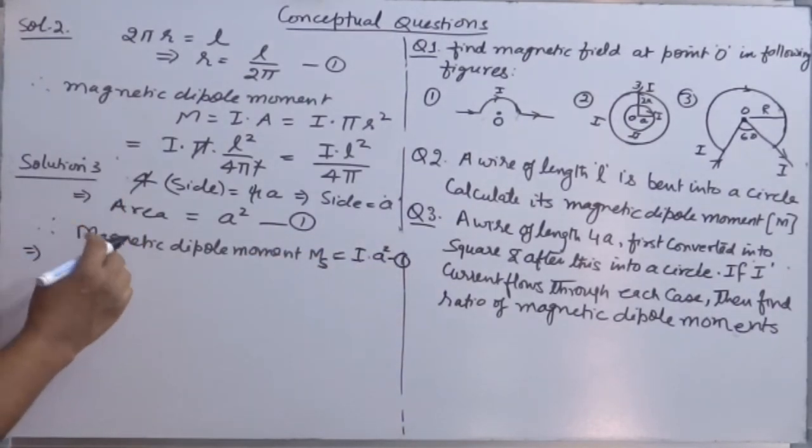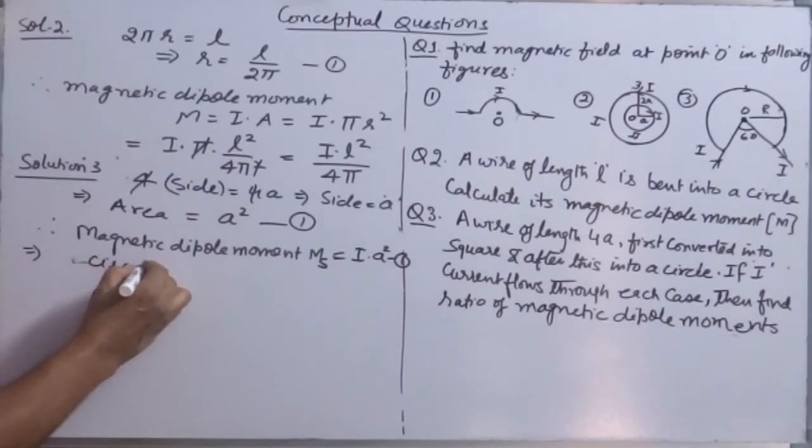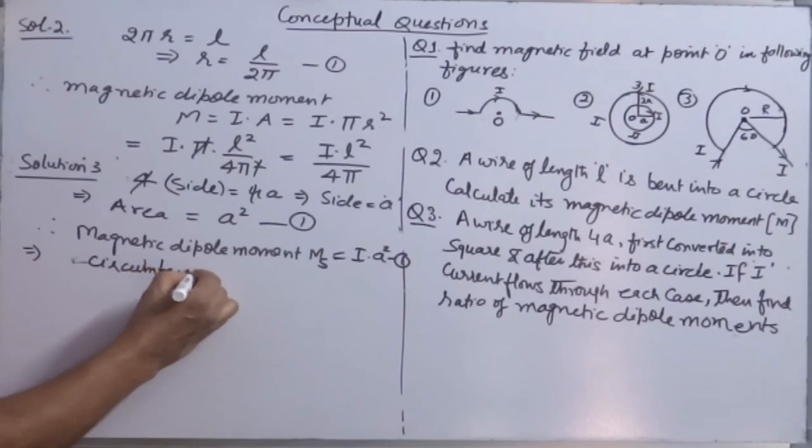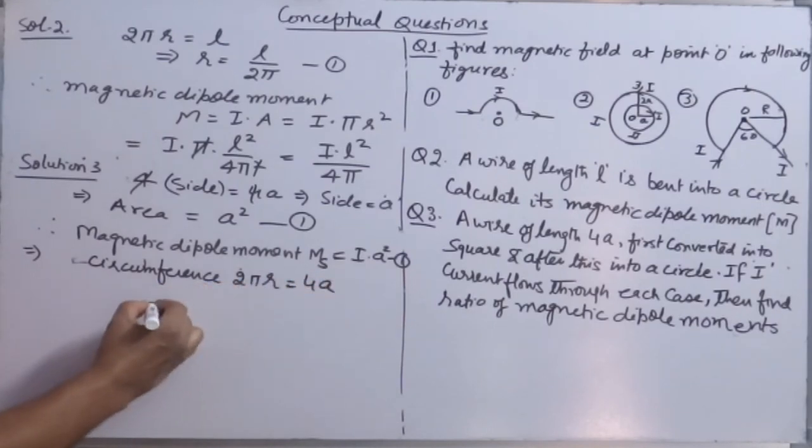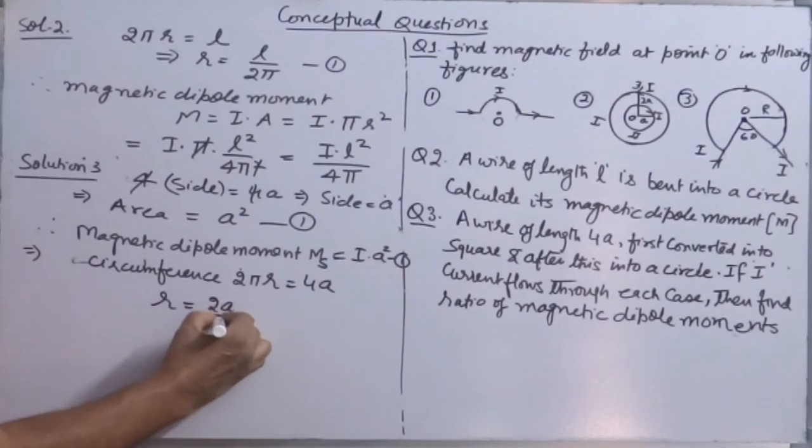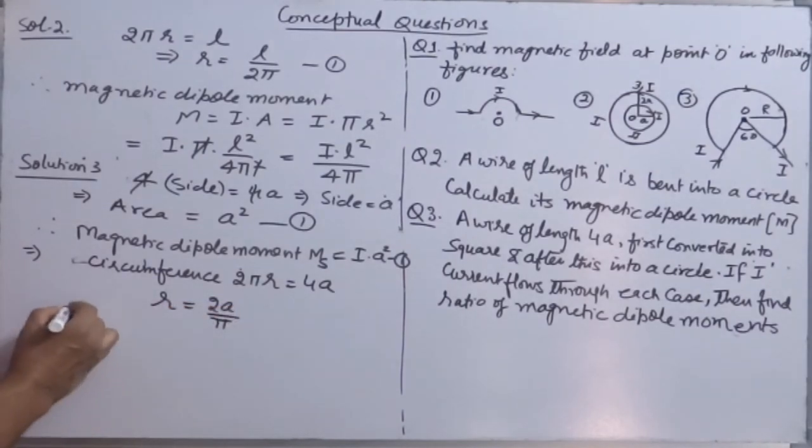Now 4A is also the circumference of a circle. That is, 2πR = 4A. Then R = 2A/π.